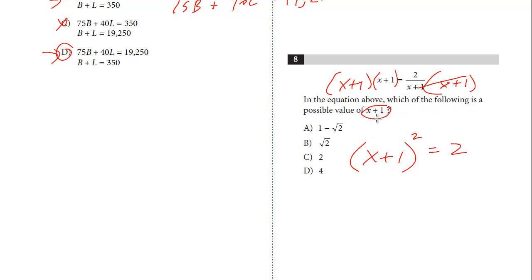We're getting closer. So how do we get rid of the square? We take the square root of both sides. And so this just becomes X plus 1. We take the square root of 2, and that's going to be plus or minus. And so the two solutions for X plus 1 would be the square root of 2, positive or negative. And if you look at the choices, we don't have the negative. We only have the positive. And so that could be a possible solution. B is the answer.